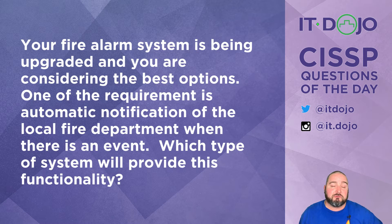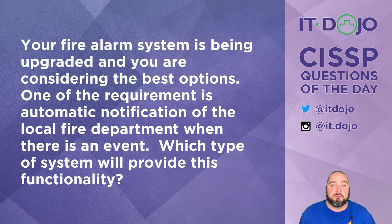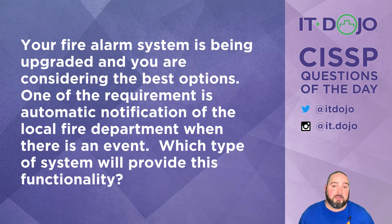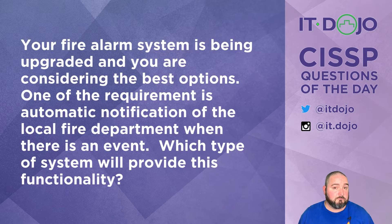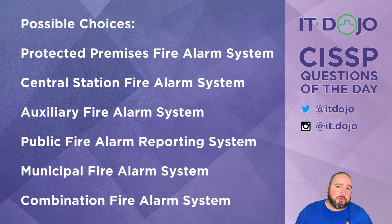Here comes question number two. At your organization, the fire suppression or fire alarm system is being upgraded, and one of the requirements is that it has to interface with and provide notification to the local municipal fire department if an alarm goes off. Given that you have a local fire alarm plus the need to notify the local fire department, which of the options is the type of fire alarm system you're looking for? Give them a read, click pause, and then we'll break each one down.